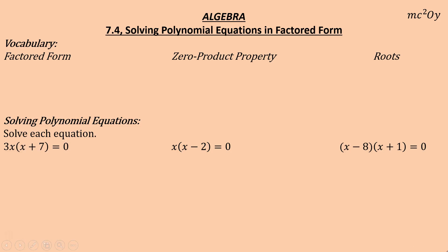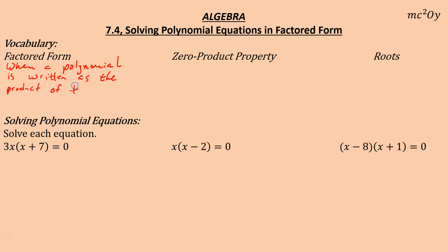7.4: Solving polynomial equations in factored form. First, some vocab terms. A polynomial is in factored form when it is written as the product of two or more factors.